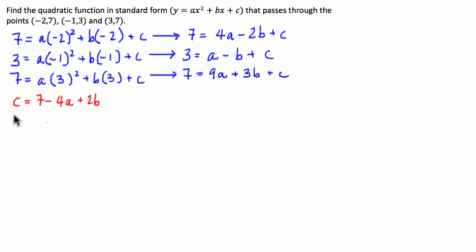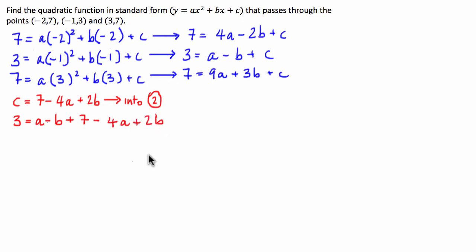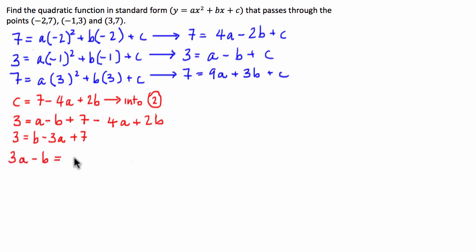Now that we've isolated c, we're going to substitute that into equation 2 — hence the substitution method. That gives us 3 = a - b + (7 - 4a + 2b). Combining like terms: a - 4a = -3a, and -b + 2b = +b, so we get 3 = b - 3a + 7. Rearranging, moving 3a and b to the left: 3a - b = 7 - 3 = 4.